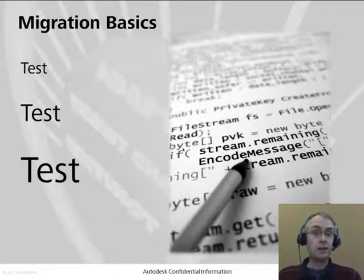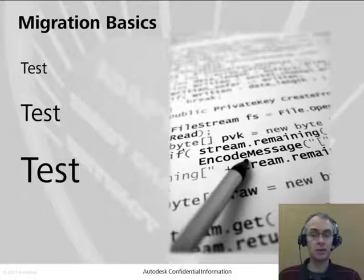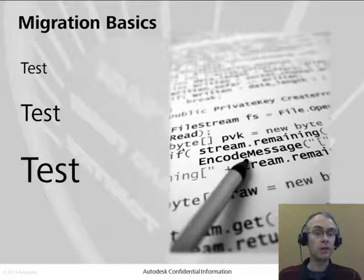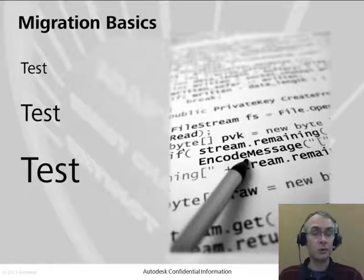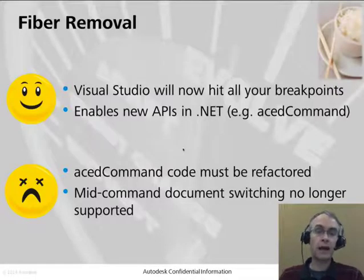However, we have made very significant changes to the basic architecture of AutoCAD. It's very important for this release that you test your applications — even LISP applications — carefully, particularly in areas where you're using AcedCommand or the command function in LISP, or where you're dealing with document switching or accessing the currently active document. The primary reason for this is the work done to remove a very old technology called Fibres from AutoCAD, which has some good and some bad effects for you.